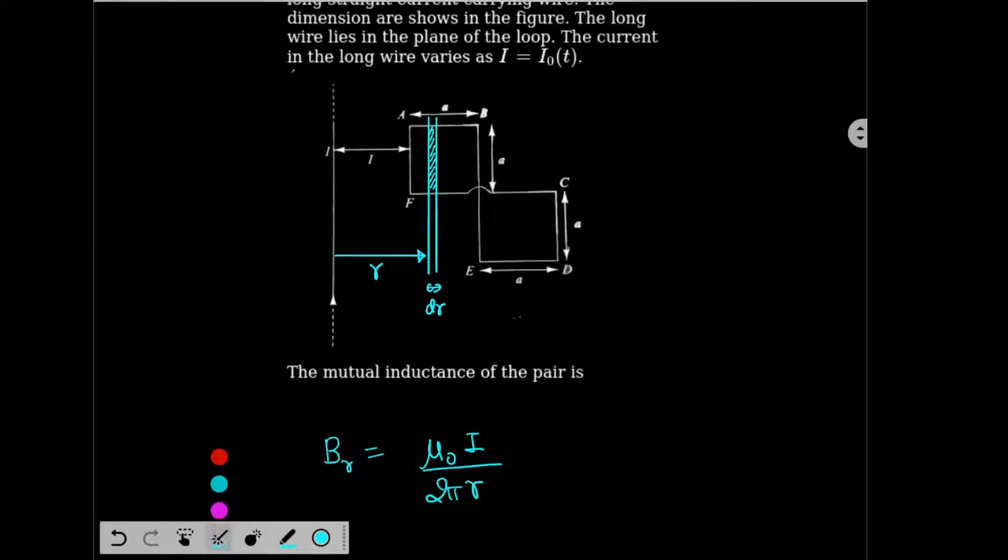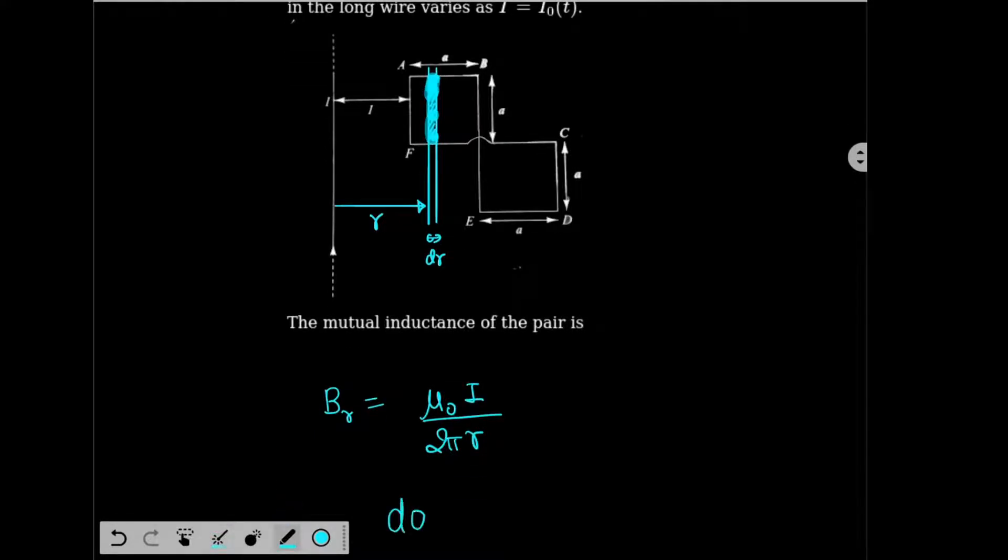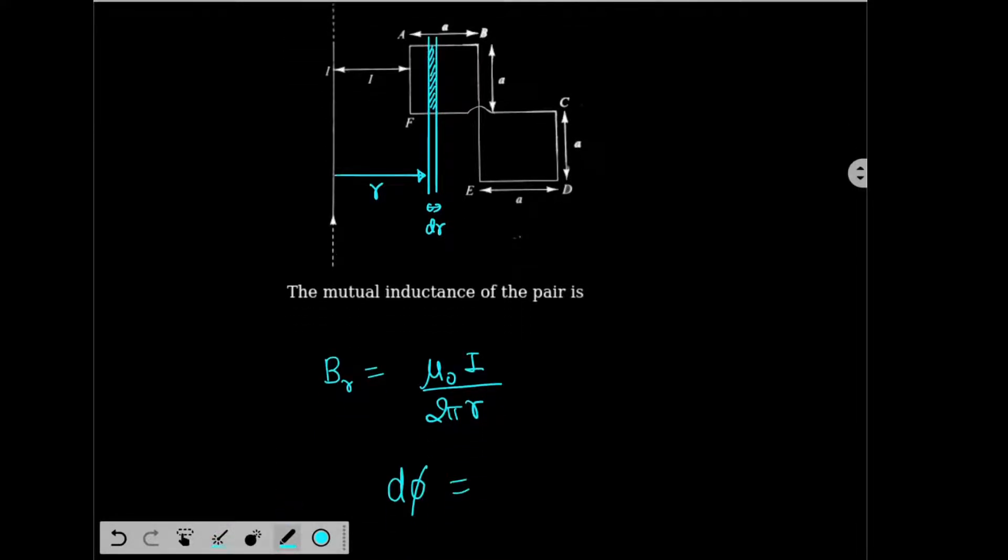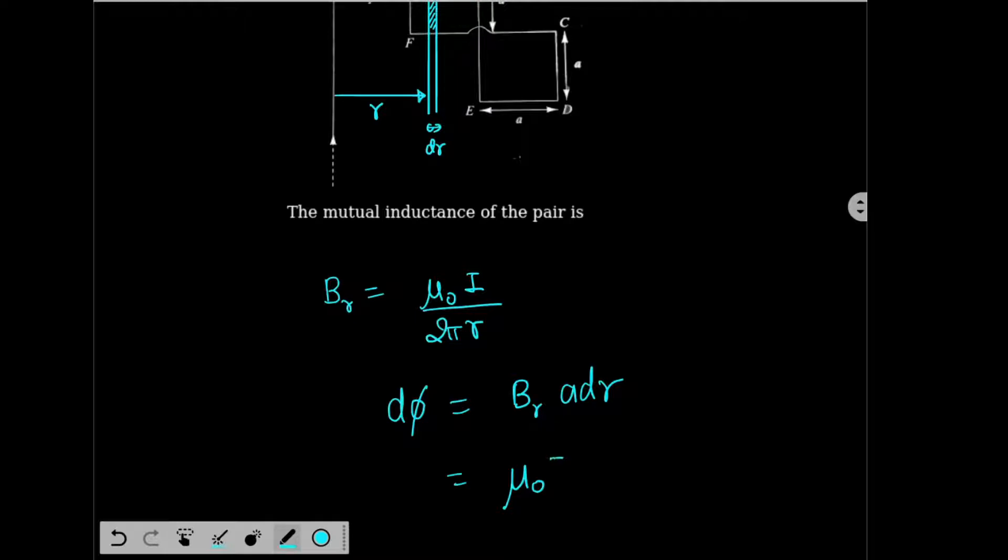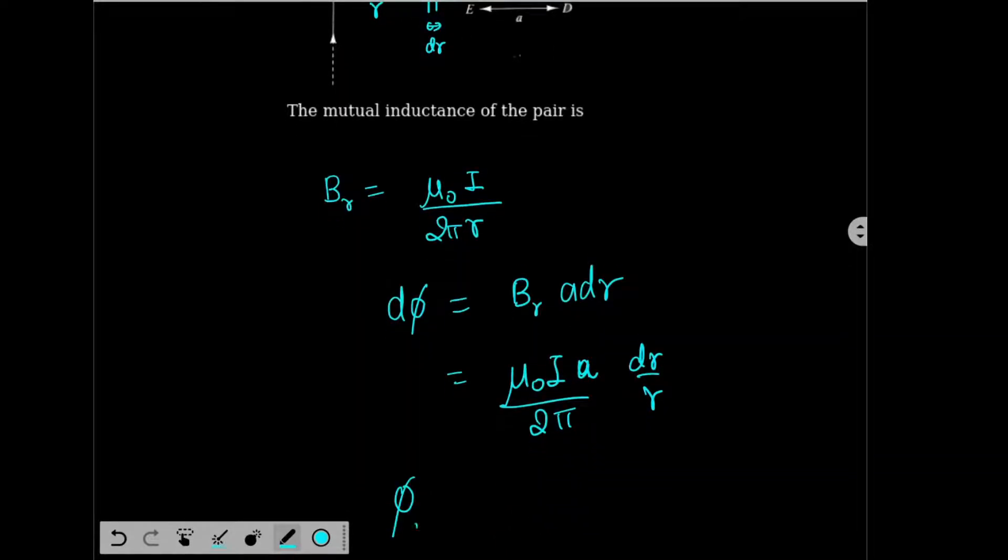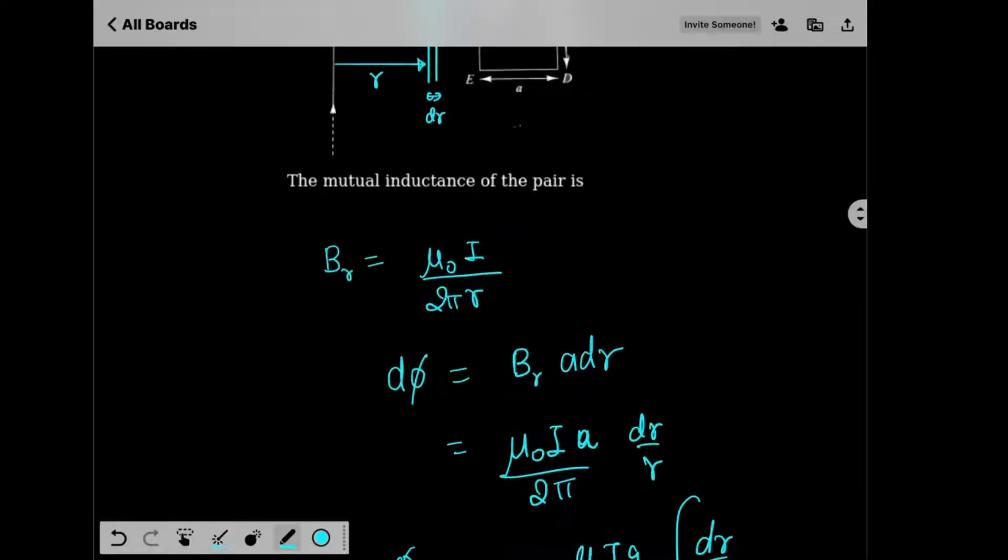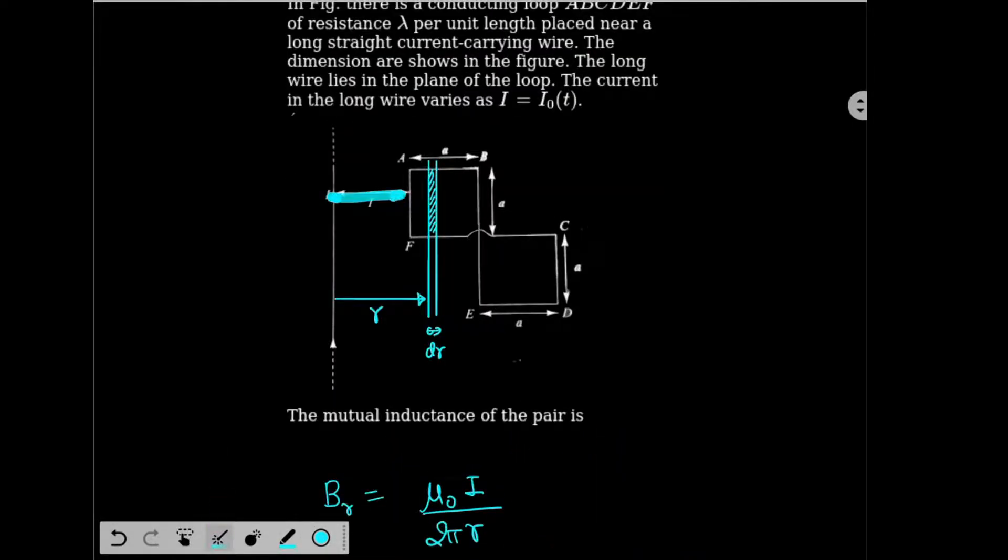And therefore the flux through this element D phi will be how much? D phi will be BR into area of this element. There will be how much? Base is DR, height is A, so A DR. So this is equal to Mu0 IA by 2 pi, DR by R. So the flux for one square loop will be how much? Mu0 IA by 2 pi, integration DR by R. And the limits are from L to this total distance is how much? L plus A.